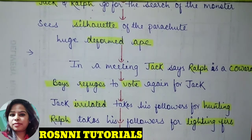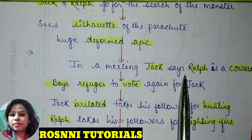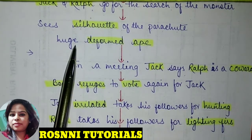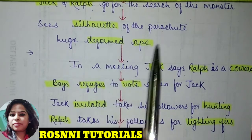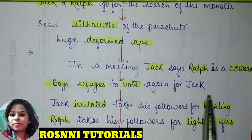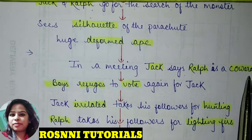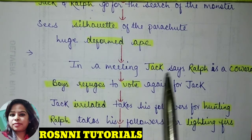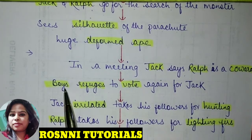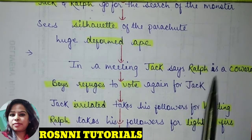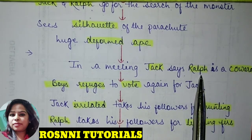In a meeting, Jack called Ralph a coward because Ralph did not want to move further after they believed it was a monster. The boys were made to vote again, but they did not vote for Jack — they again voted for Ralph, who remained leader of the group.